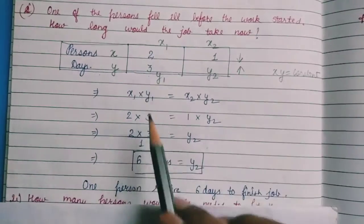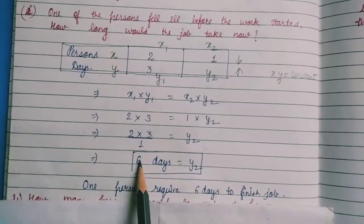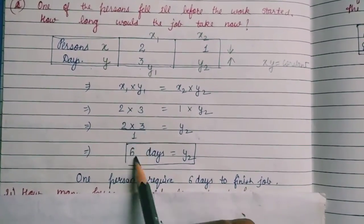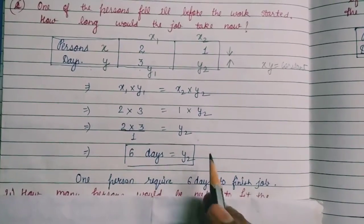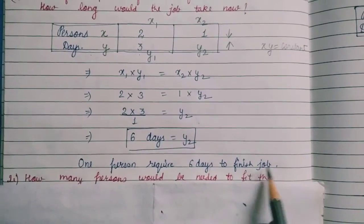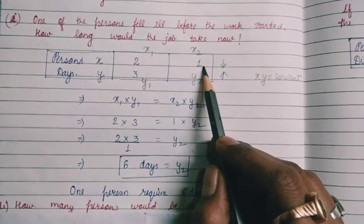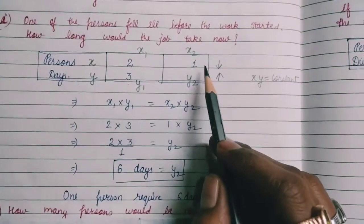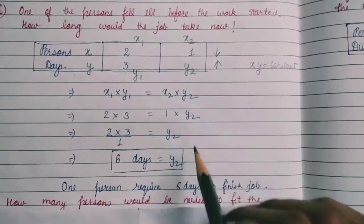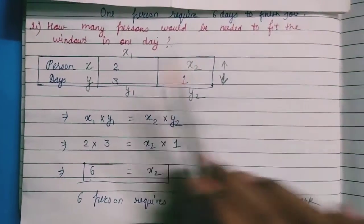Using x₁ × y₁ = x₂ × y₂: x₁ = 2, y₁ = 3, x₂ = 1, y₂ is unknown. Moving 1 to the other side: 2 × 3 = 6 days for y₂. So one person requires 6 days to finish the job.